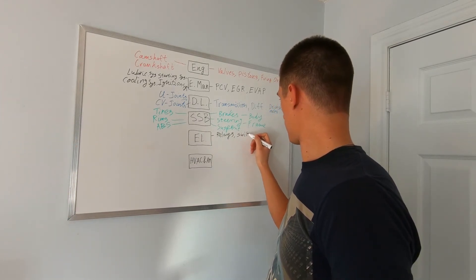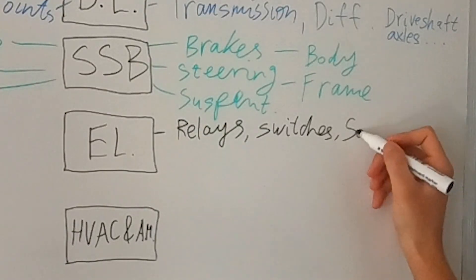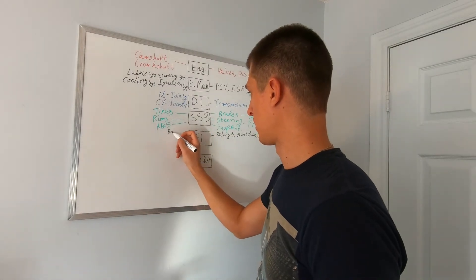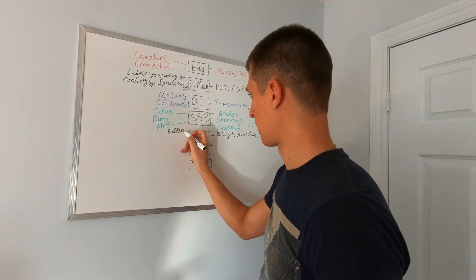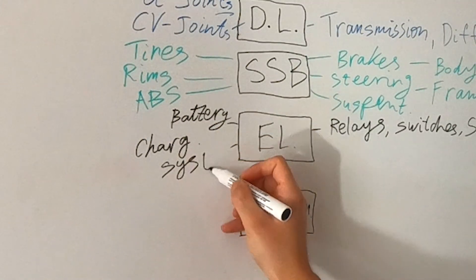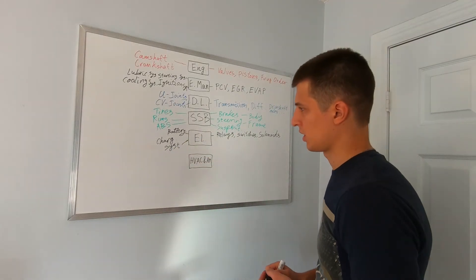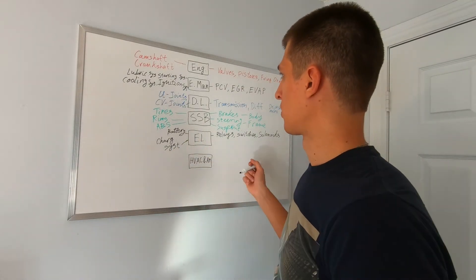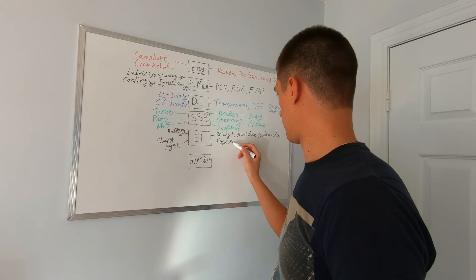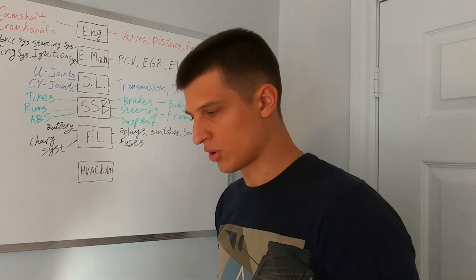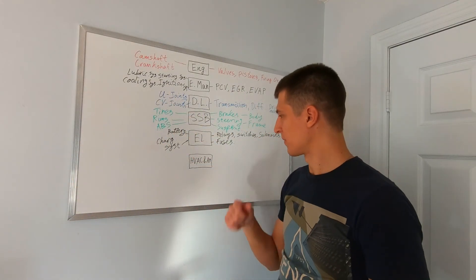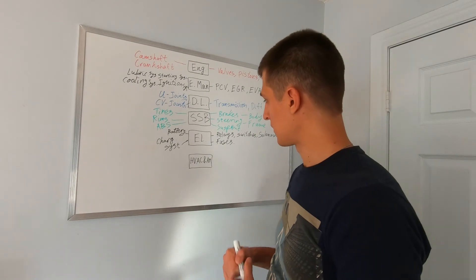So this is going to be all your relays, switches, solenoids, obviously your battery, the charging system with the alternator, fuses, your fuse box - anywhere where you can put your multimeter and measure for current or voltage.